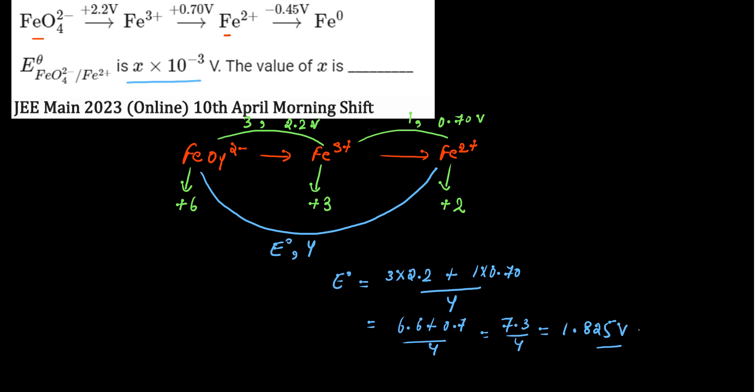So this will be 1.825, which equals 1825 × 10⁻³ volts, meaning x = 1825. If you don't get an absolute value, just convert the number to that format and then use the rules of rounding off.